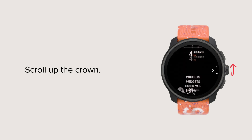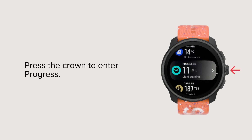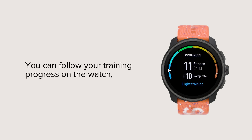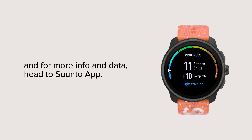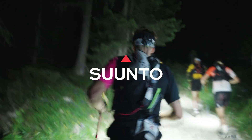Scroll up the crown. Press the crown to enter Progress. There you go. You can follow your training progress on the watch, and for more info and data, head to the Suunto app. Thank you.